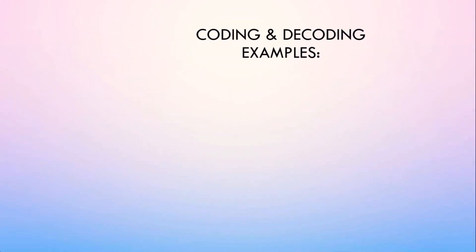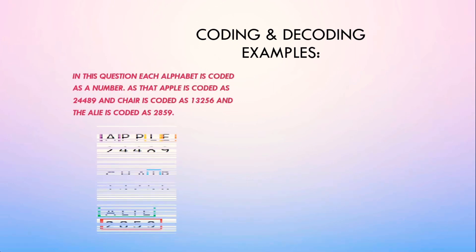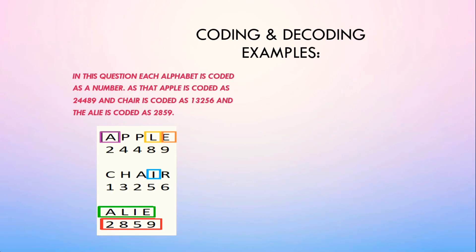Coding and Decoding Examples. In this question each alphabet is coded as a number. Apple is coded as 24489, chair is coded as 13256, and alley is coded as 2859.